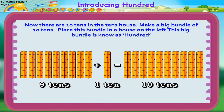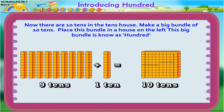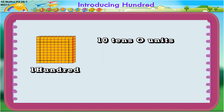Now, there are 10 tens in the tens house. So, make a big bundle of 10 tens and place this bundle in a house on the left. This big bundle is known as 100, and it has 10 tens and 0 units.